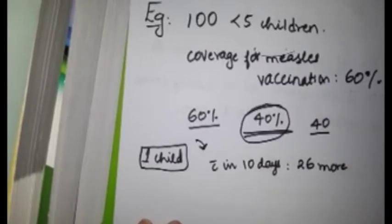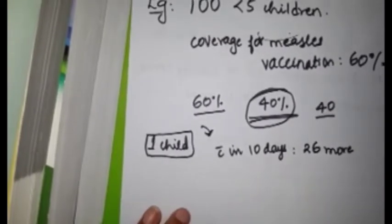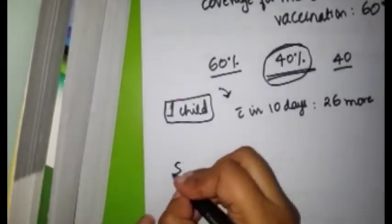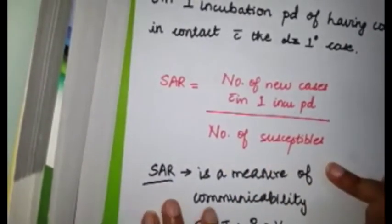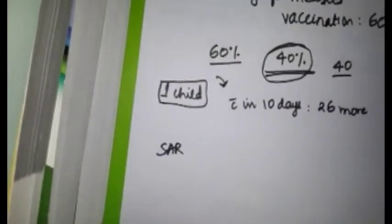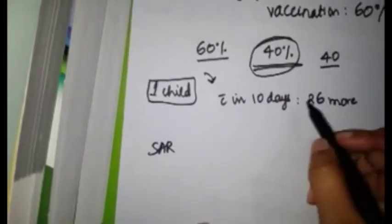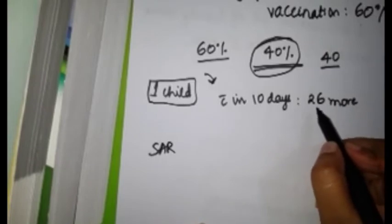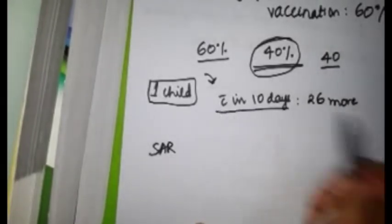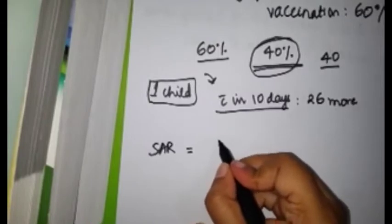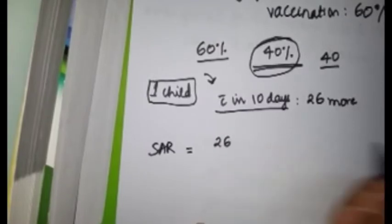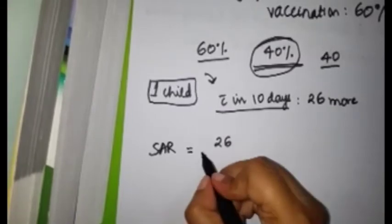Next, within ten days—that is, within the next incubation period—26 more children developed measles. Now calculate the secondary attack rate. What is secondary attack rate? Go back to the definition: number of new cases within one incubation period divided by number of susceptibles.